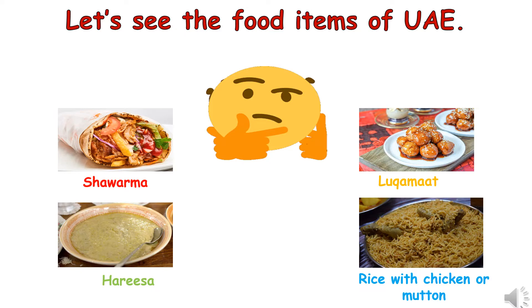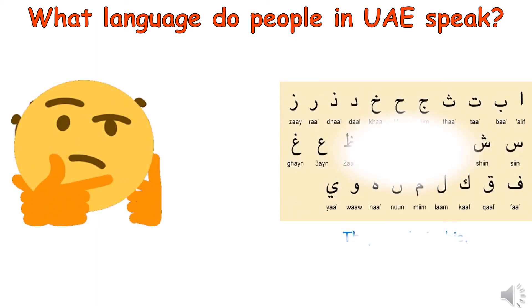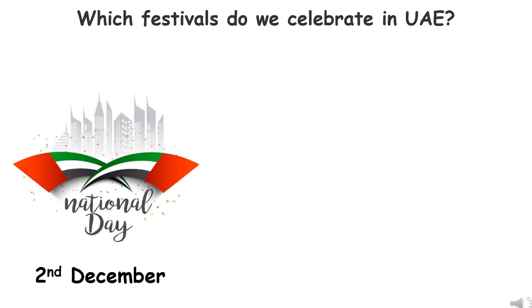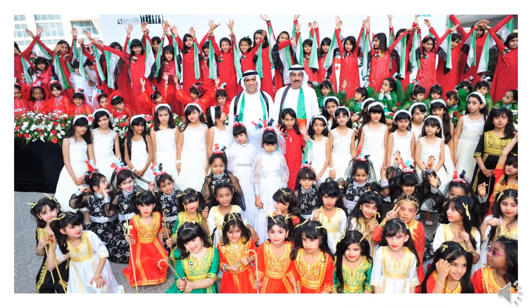What is the national dress of the country? What language do people in UAE speak? We speak Arabic. Which festivals do we celebrate in UAE? National Day on 2nd December and Flag Day on 3rd November. We celebrate UAE National Day in our schools too.